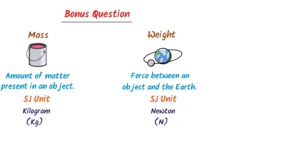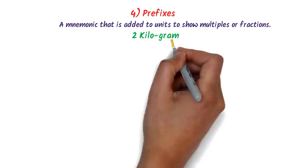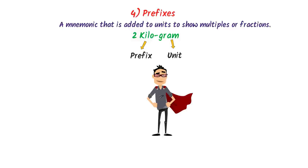The fourth topic is prefixes. A mnemonic added to units to show multiples or fractions is called a prefix. For example, in 'two kilogram,' gram is the unit and kilo is the prefix. To remember the list of important prefixes, I use a personal trick: I write 10 to the power 1, 2, 3, then jump by 3: 6, 9, 12.